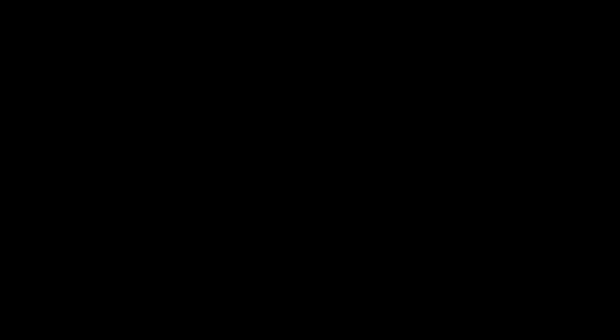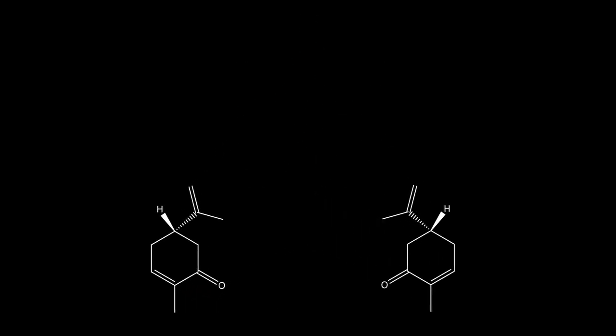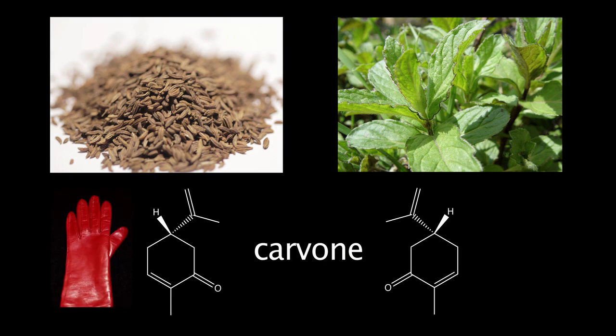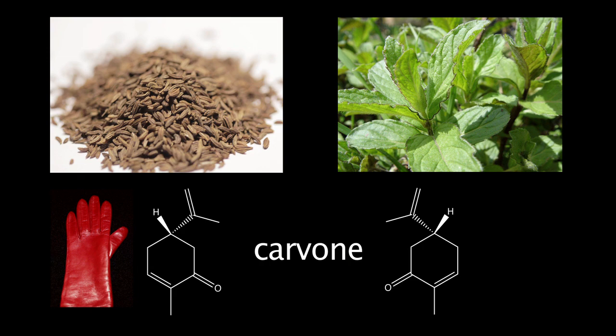When we do have a chiral molecule, sometimes its enantiomer has an entirely different function. For example, the enantiomers of carvone are the flavors of caraway and spearmint. One enantiomer of carvone fits into a specific receptor in your nose the way a left-handed glove fits your left hand. The other enantiomer fits into an entirely different receptor, resulting in a different odor.